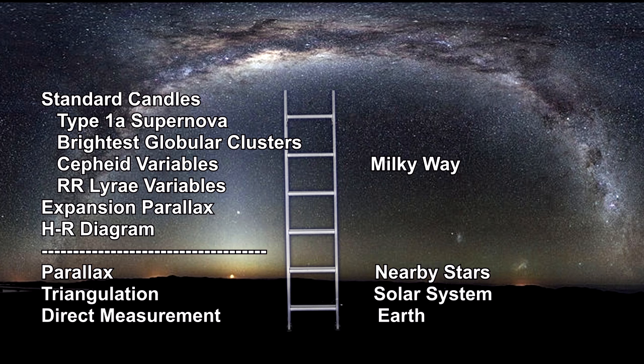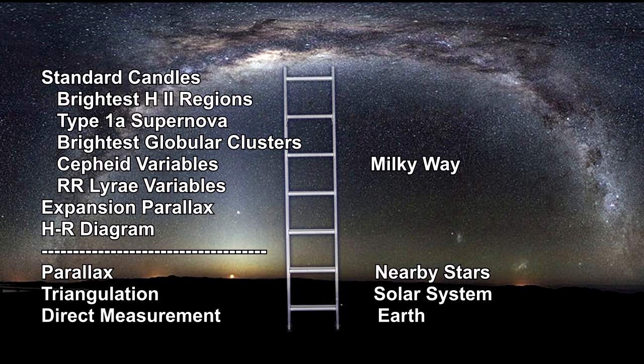Like globular star clusters, H2 regions come in a wide variety of sizes and luminosities. But, just like with globular clusters, observations have shown that the brightest H2 regions all have a common luminosity. This makes them an important standard candle, because just like the brightest globular clusters, they are bright enough to be seen out to great distances. So, we can add them to our distance ladder.